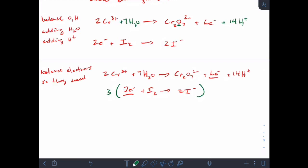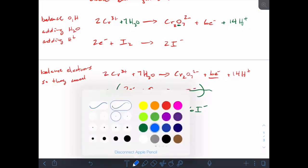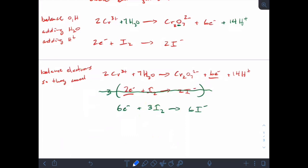So I'm going to just right below it, write that out. So I'll have 6 electrons plus 3 I2's gives 6 I minuses. So I'm just going to cross that out. So now I'm going to go ahead and cancel, use another color, cancel my electrons. So six electrons are canceled by six electrons. And just to make this easier to look at, I'm just going to take this out entirely.